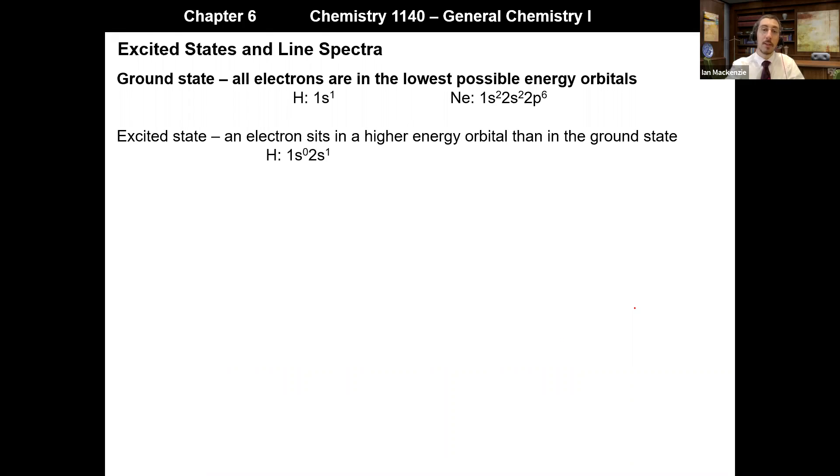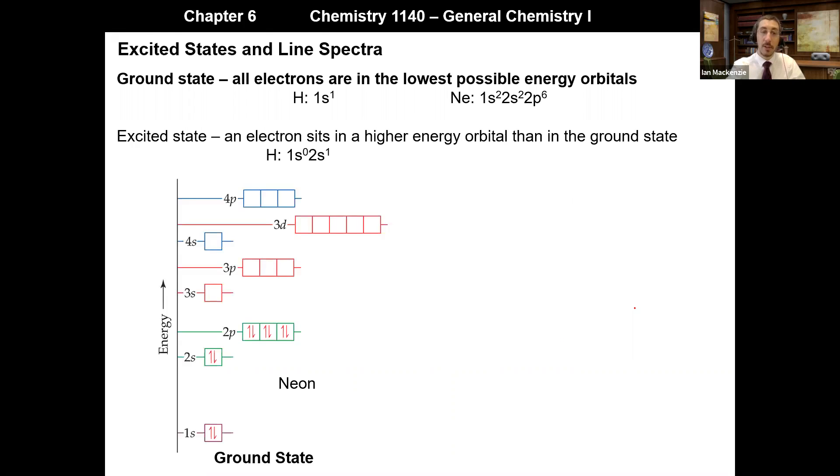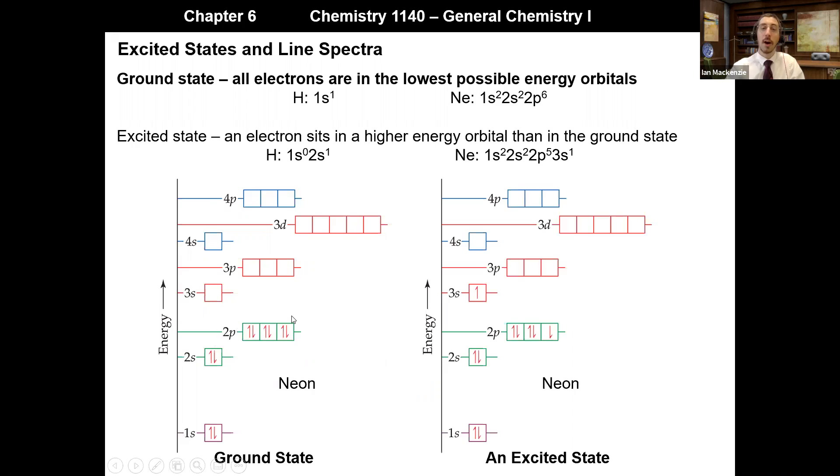If we look at neon, we can draw something very similar. So the ground state has the electrons in the 1s, the 2s, and the 2p orbitals, and they're all paired. But if we somehow promote an electron to an excited state, we take one of the highest energy electrons, so one's in the p orbital, and bump it up into a higher energy orbital, say the 3s orbital. We can now get an excited state which we would write its configuration as 1s2, 2s2, 2p5, 3s1.